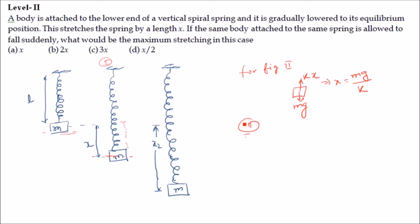Now consider figure three, where the object is allowed to fall suddenly. At natural length l, the initial position is x = 0. When the mass falls and reaches position x, it acquires some velocity, and because of this velocity it will travel further to its maximum stretching point x2.